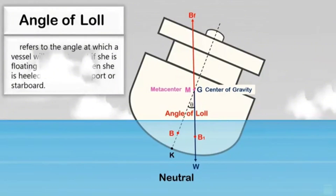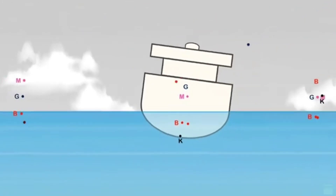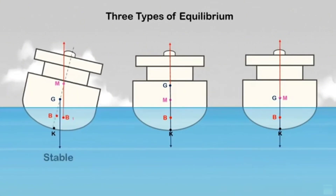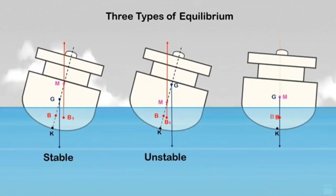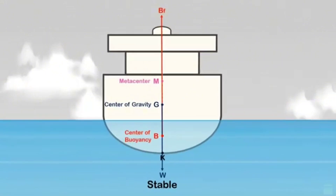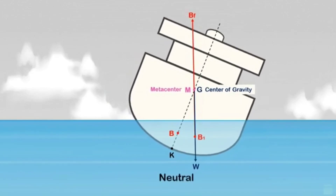Angle of loll refers to the angle at which a vessel will come to rest if she is floating in still water when she is heeled over to either port or starboard. In a previous video, various stability conditions of ships were shown — stable, unstable, and neutral conditions. This video will show the effect of unstable conditions on ship stability leading to a neutral state, which results in one of the dangerous scenarios in ship stability: the angle of loll.